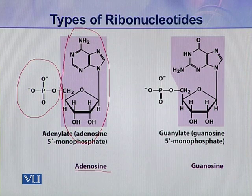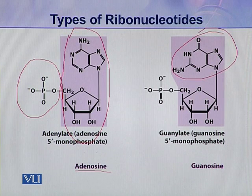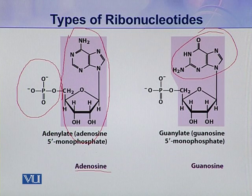The second type of ribonucleotide present in nucleic acids has guanine as its nitrogenous base. In this coloured portion, guanine joins with a pentose sugar and they make guanosine.